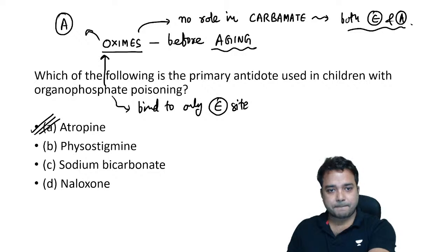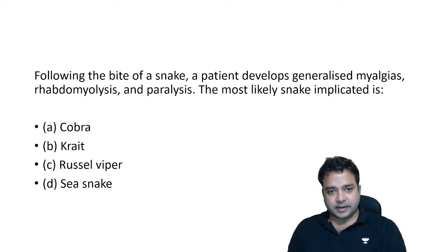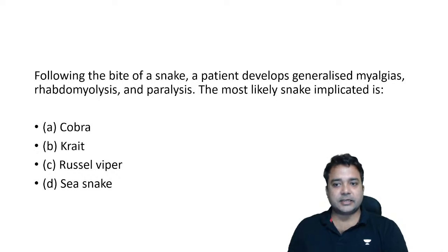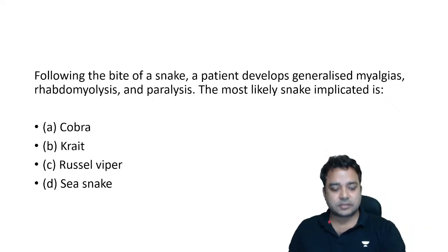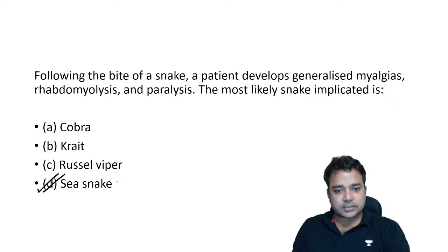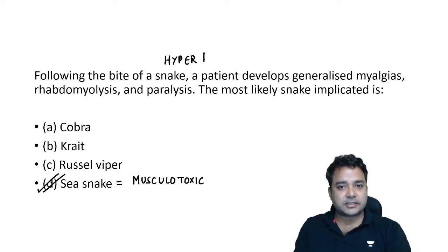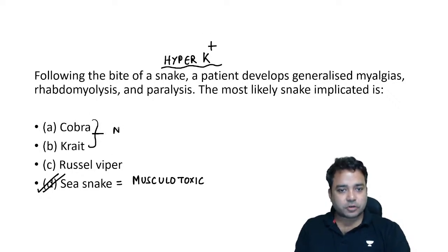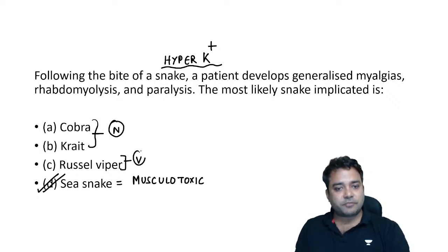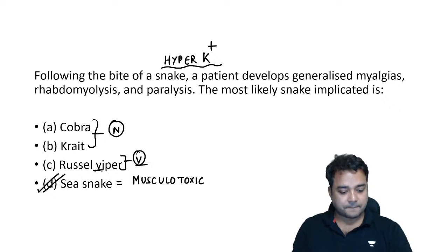Following the bite of a snake, a patient develops generalized myalgia, rhabdomyolysis, and paralysis — the most likely snake implicated is sea snake. Sea snake venom is musculotoxic or myotoxic, giving a rhabdomyolysis-like picture. Hyperkalemia is usually associated with sea snake bites because muscles are rich in potassium. Cobra and kraits are neurotoxic; vipers are vasculotoxic — V for viper, V for vasculotoxicity.